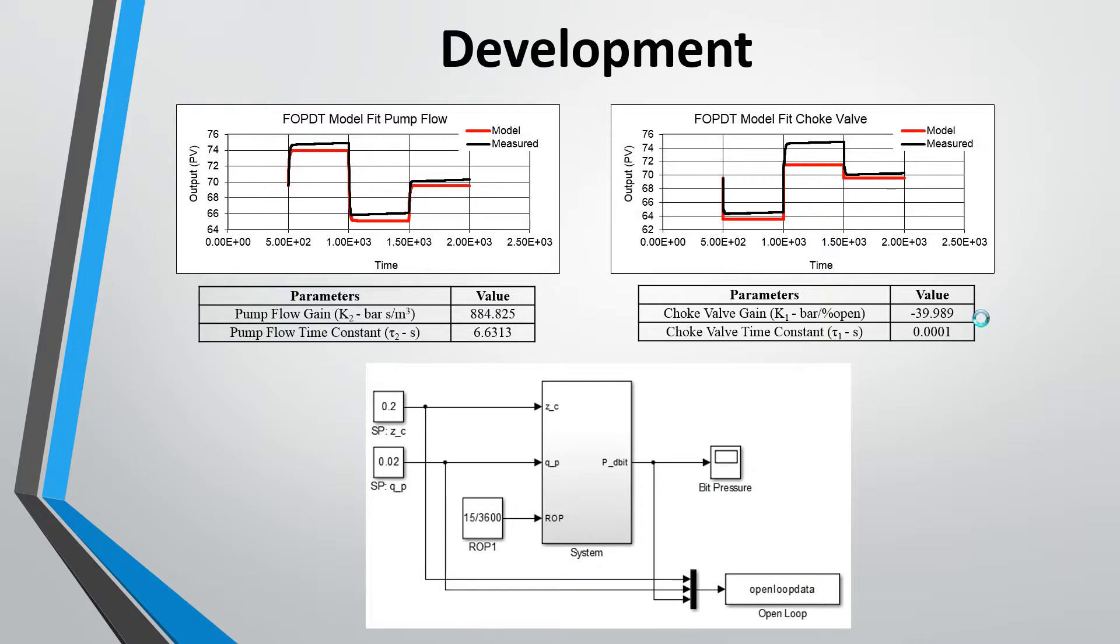The model was implemented in MATLAB and Simulink. After this we used the system to perform a doublet test in the pump flow and the choke valve opening. The tables below show the values for the gain and the time constant for both manipulated variables. Our gain for the choke valve is negative because it's direct acting.